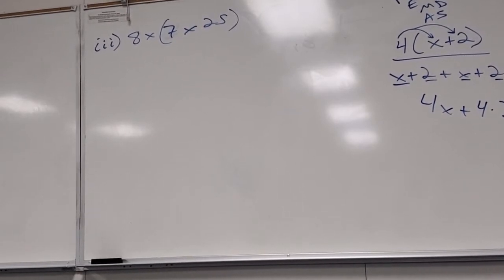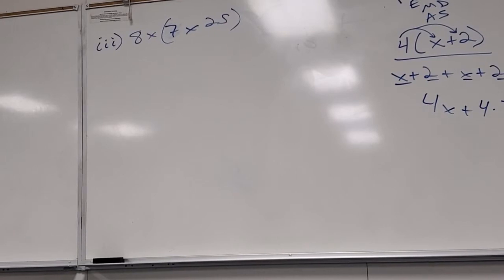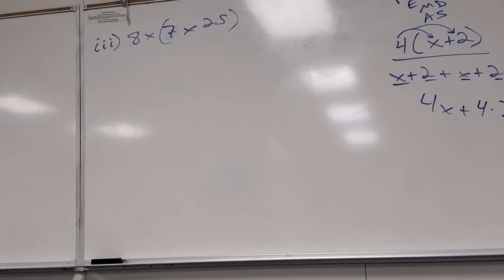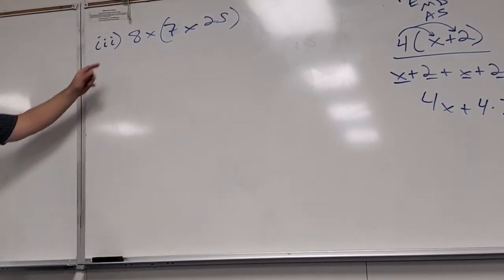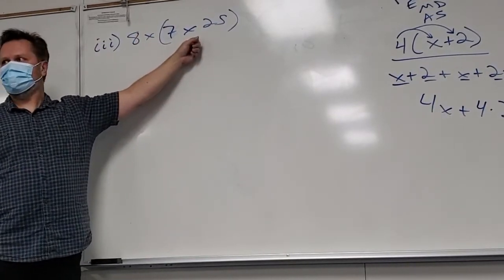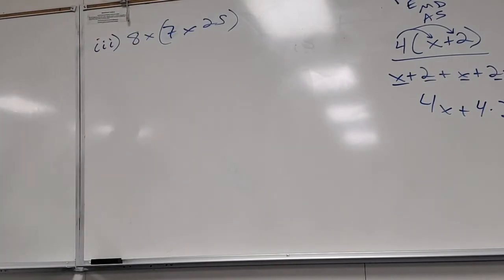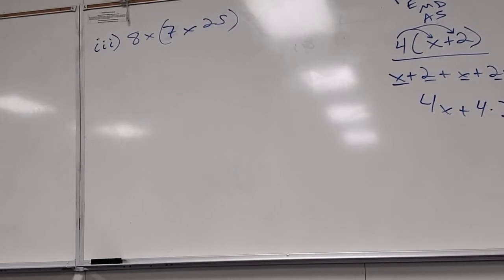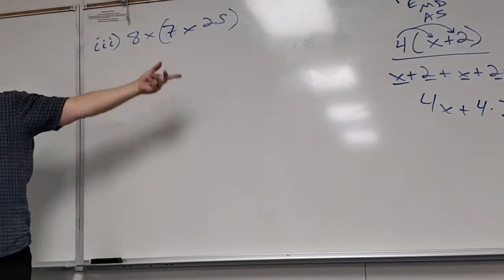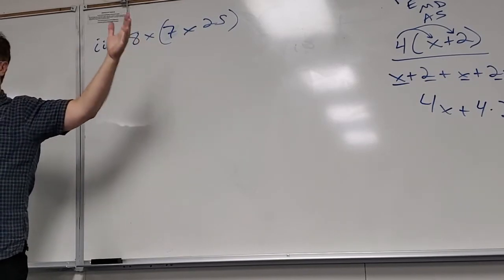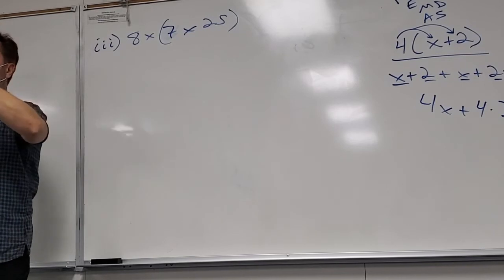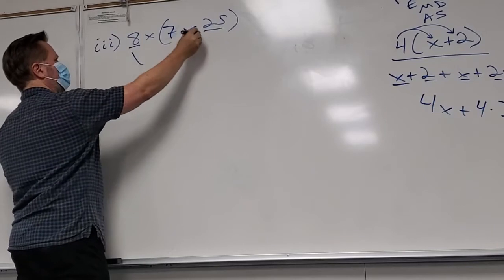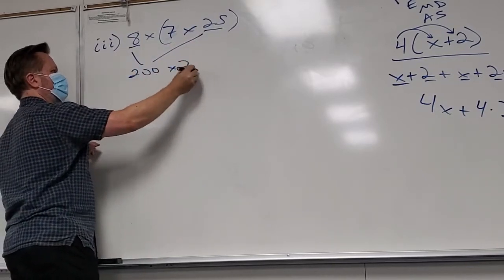Eight times twenty-five equals two hundred — because eight is two fours, and four times twenty-five is one hundred, so two fours times twenty-five is two hundred. Then two hundred times seven is fourteen hundred. Always look for a twenty-five in a multiplication problem because you can almost always work this kind of thing in.